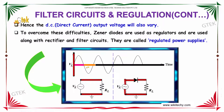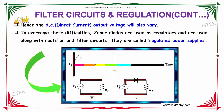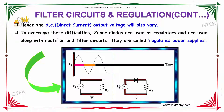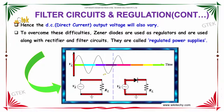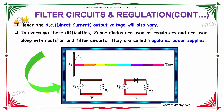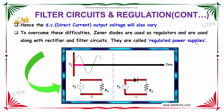The zener diode is used along with the rectifier and filter circuit, and they are called regulated power supplies. So, we have our rectifier, and connecting it with the zener diode will result in a regulated power supply, which we are now in the process of analyzing.